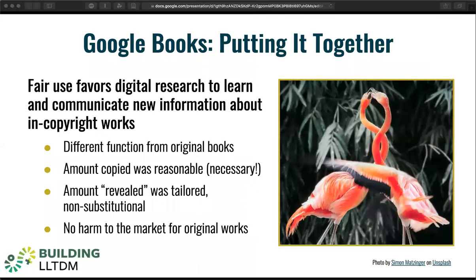The Second Circuit held that Google Books was a fair use, finding the purpose of Google's copying of the original copyrighted books is to make available significant information about those books. This is a different function from the original expressive purpose of the books. The amount copied was reasonable in light of that purpose, and the amount revealed did not represent a commercial threat to the original copyright holders.